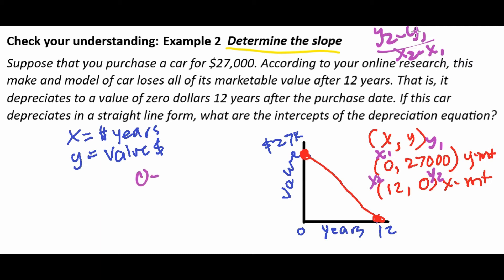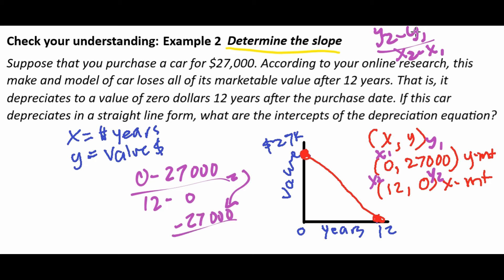So y2 is going to be zero, and we're going to subtract y1 from that, which is going to be 27,000. Then we're going to have x2, which is 12, and we're going to subtract out zero. When we have zero minus 27,000, we get negative 27,000 divided by 12. That means our slope is going to be a negative value, which makes sense because when you are losing value, the value of the car is going down. The answer is going to be negative $2,250 — that is the slope, meaning we're losing $2,250 every single year.